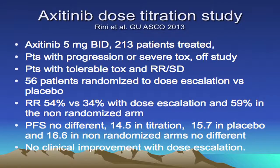More clinical data showing that dose escalation did not get us where we wanted in terms of efficacy improvement comes from the axitinib dose titration study. Starting at 5 mg twice daily, 213 patients were treated, and anyone with progressive disease or severe toxicities was removed from the study. Patients tolerating it well were then randomized to either dose escalation up to 10 mg twice daily or placebo.